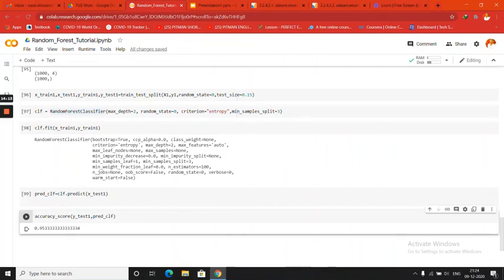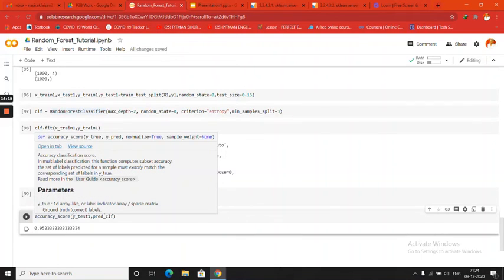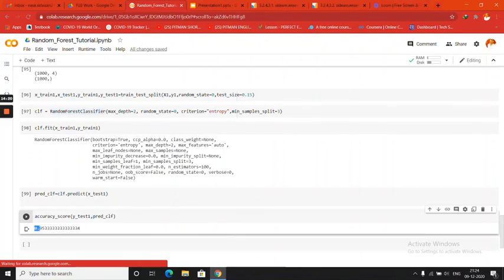So y_true comma y_predicted. This is the format. Always remember this. Accuracy score of y_test comma pred_clf. So we are getting a 95% accuracy, which is very good. So this is the basics about random forest. I have given you this tutorial.